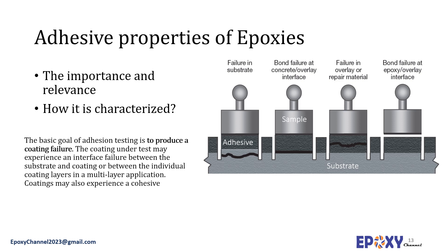The failure could be one of the following: failure within the substrate, meaning part of the substrate cracks and comes with the sample; bond failure between the substrate and the adhesive; failure of the adhesive itself when the load is applied; or the substrate and adhesive remain together while the sample separates. Based on these types of tests and failure modes, the adhesion property of a sample is characterized.